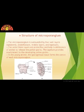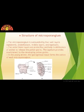Now we will understand the structure of microsporangium. In a transverse section, a typical microsporangium appears nearly circular in outline. It is generally surrounded by four wall layers. What are these four wall layers? Starting from the outside: the epidermis, then the endothecium, then the middle layer, and the tapetum, which is the innermost. The outer three wall layers perform the function of protection and help in dehiscence of the anther to release the pollens.